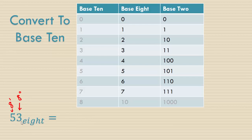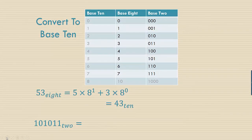You multiply the face values 5 and 3 times their respective place values. So really 53 base 8 is 5 times 8 to the 1st plus 3 times 8 to the 0. That's going to be 40 plus 3 or 43 in base 10, the number system that we use every day.